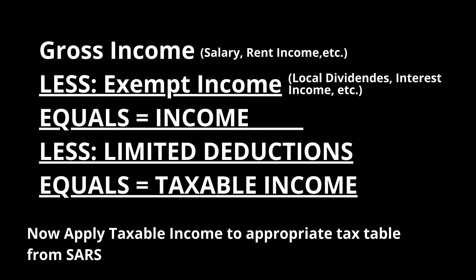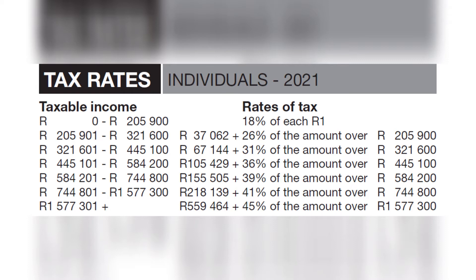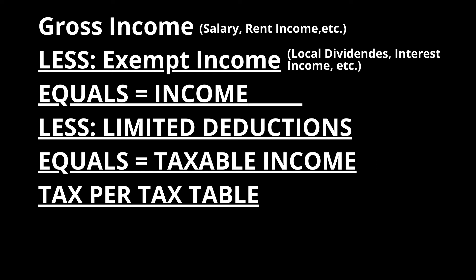Here is an example of the 2021 tax table for individuals. The taxable income amount determines which line of the table you apply. If your taxable income is below R205,900 you use the first line; if it is R1.6 million you apply the last calculation on the table. Once you've applied the tax table, you have the tax as per the tax table.